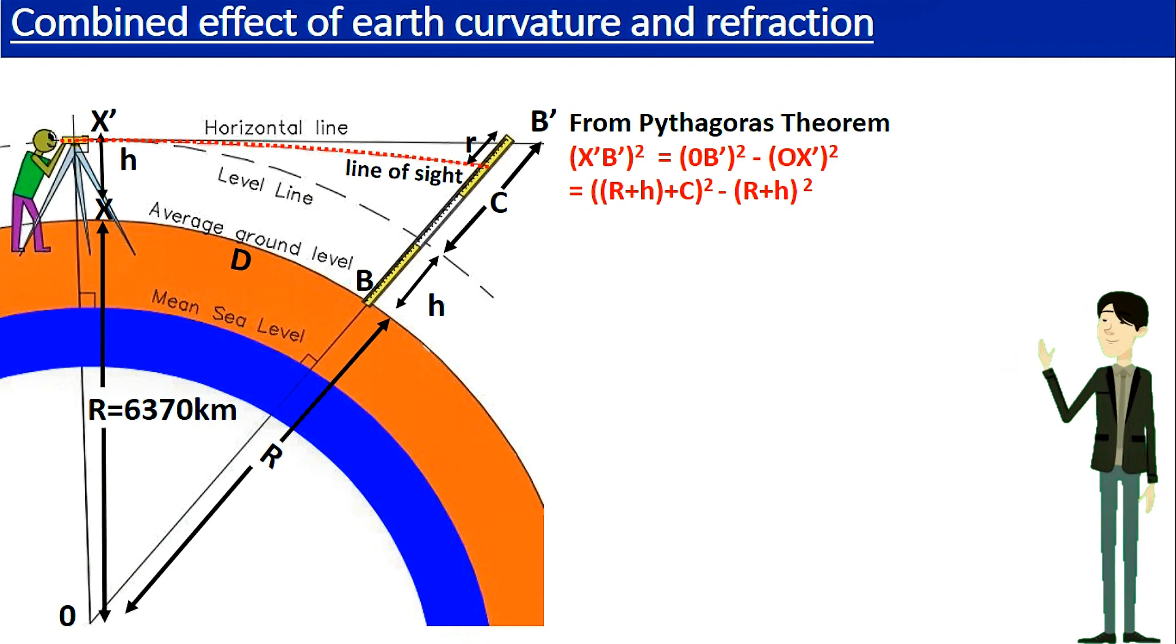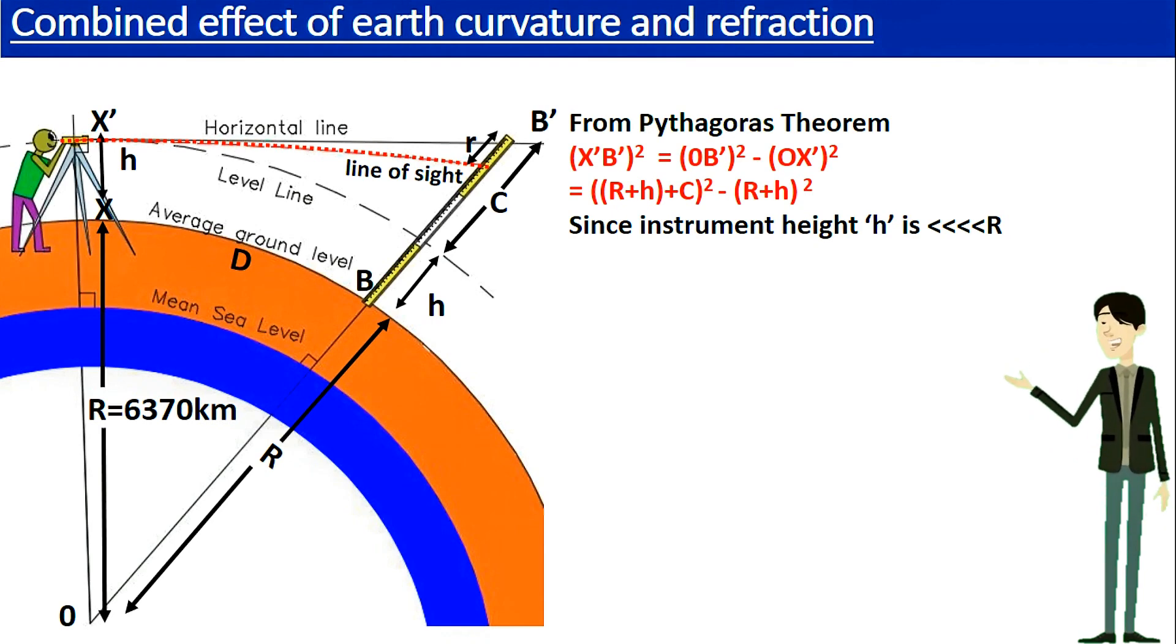Now we can apply these conditions to the Pythagoras theorem since OX dash B dash triangle is a right angle triangle. Accordingly X dash B dash squared is equal to OB dash squared minus OX dash squared. Then we can substitute OB dash by R plus H plus C and OX dash by R plus H.